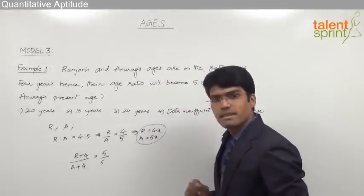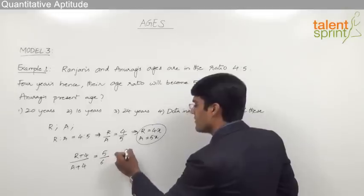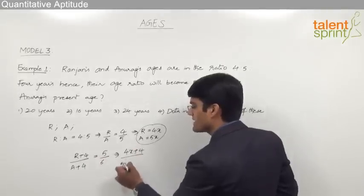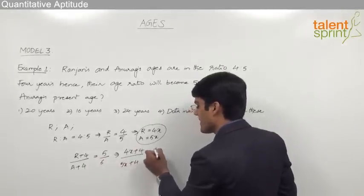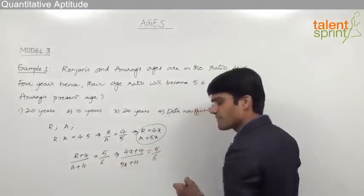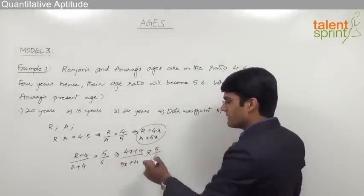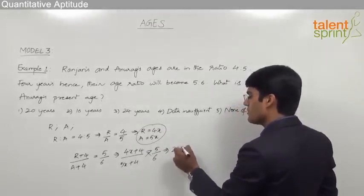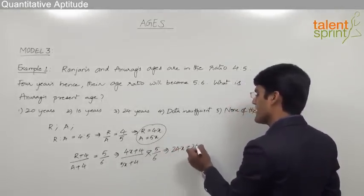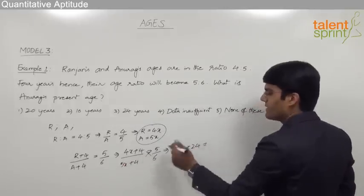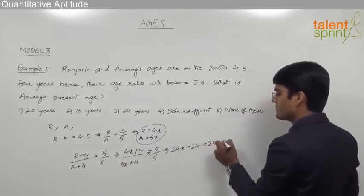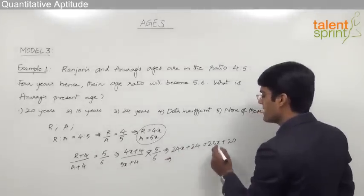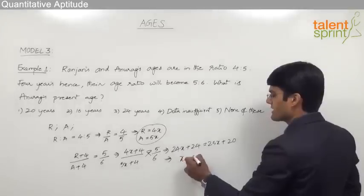Now let us substitute r equals 4x and a equals 5x in the second equation. So we get (4x + 4) by (5x + 4) equals 5 by 6. By simplifying this with cross multiplication, we get 6 times (4x + 4) equals 5 times (5x + 4), giving us 24x + 24 equals 25x + 20.